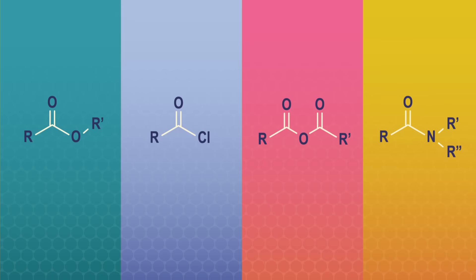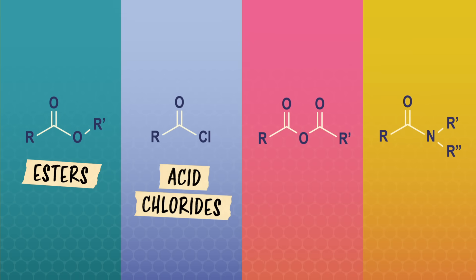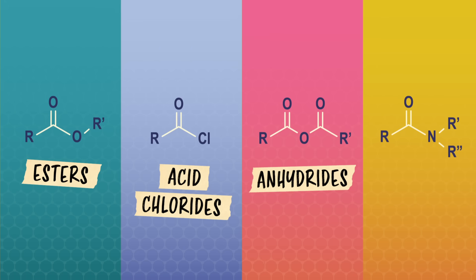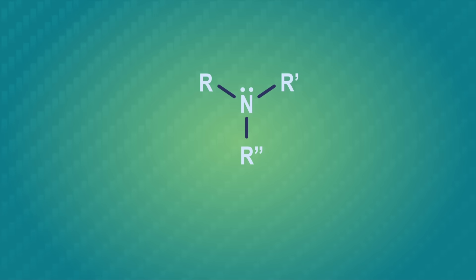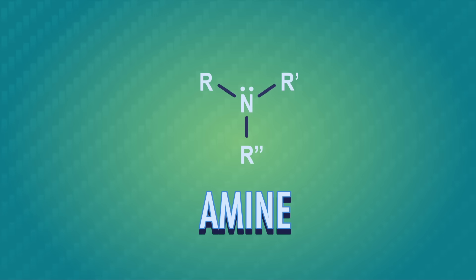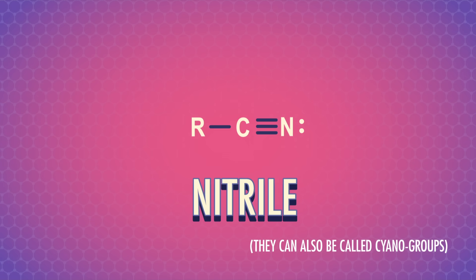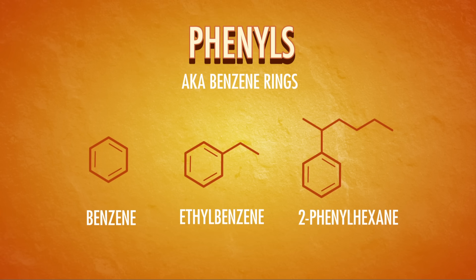Carboxylic acids can undergo a lot of reactions to form molecules like esters, which smell nice; acid chlorides, which don't smell nice; anhydrides with an extra carbonyl group; and amides, which contain nitrogen. I'm going to name a few more functional groups rapid-fire — it's okay if you don't know them as well yet, because we'll spend plenty of time with them later. Amides are a nitrogen attached to three R groups with one lone pair, and at least one of those R groups has to have some carbon in it. Nitriles have a triple bond between a nitrogen atom and a carbon atom. And phenyls, also known as benzene rings, are a six-carbon ring with alternating single and double bonds. The nomenclature for these compounds is really complicated, so this is another case where IUPAC lets trivial or common names slide.